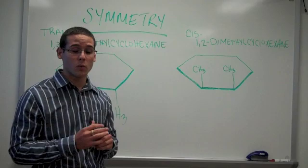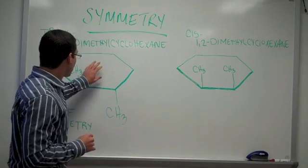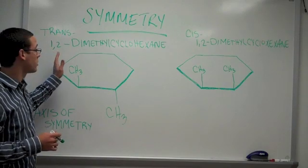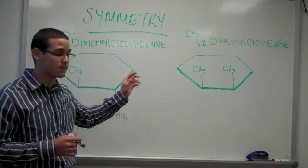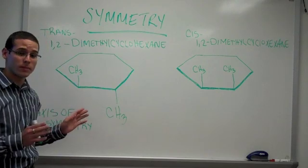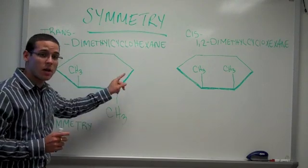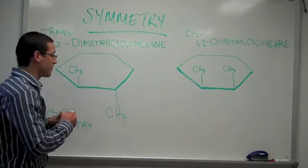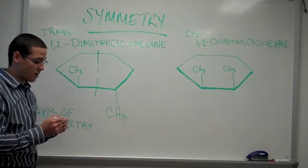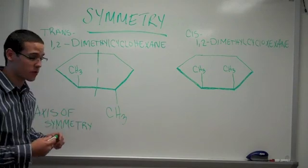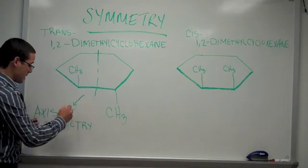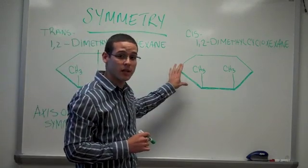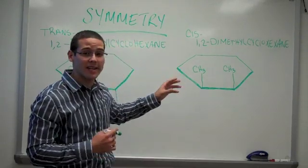There are two types of symmetry: rotational symmetry and reflection symmetry. We're going to describe rotational symmetry first. Here, we have a trans-1,2-dimethylcyclohexane. So if we take one methyl group and rotate it 180 degrees, we will generate the same image. Therefore, we have an axis of symmetry. When we have cis-1,2-dimethylcyclohexane, we do not have an axis of symmetry.